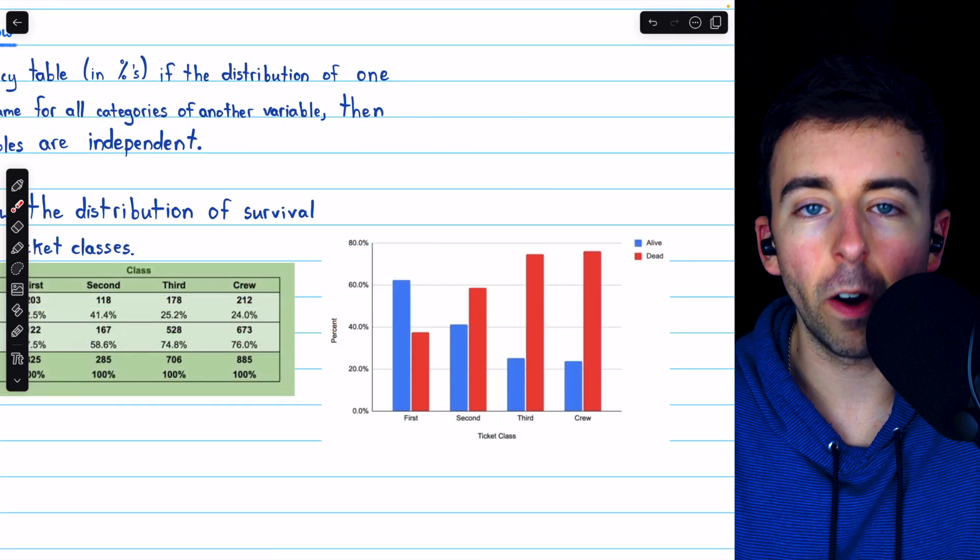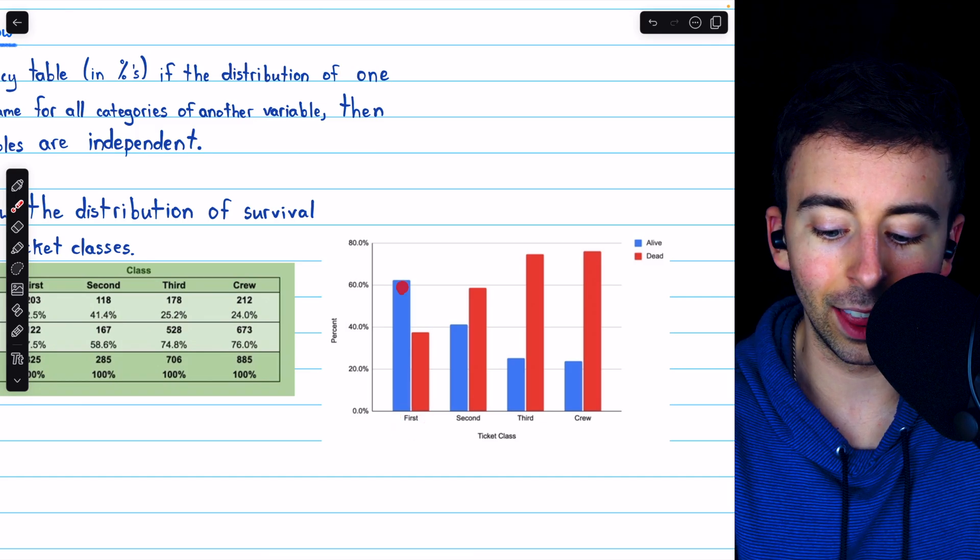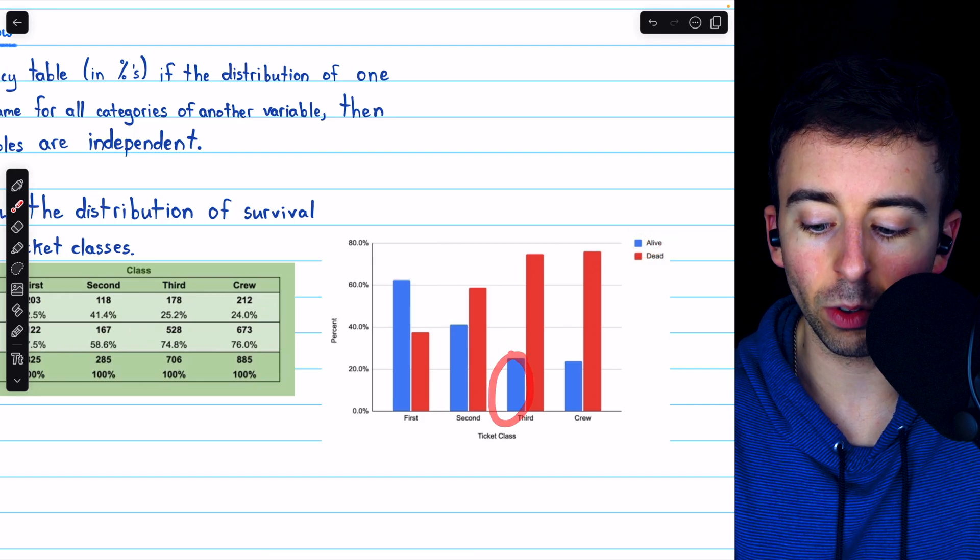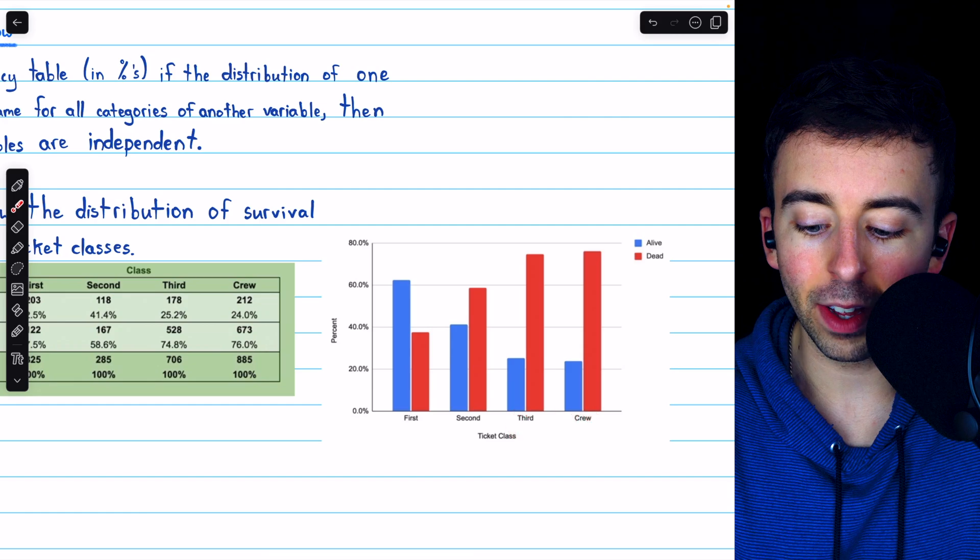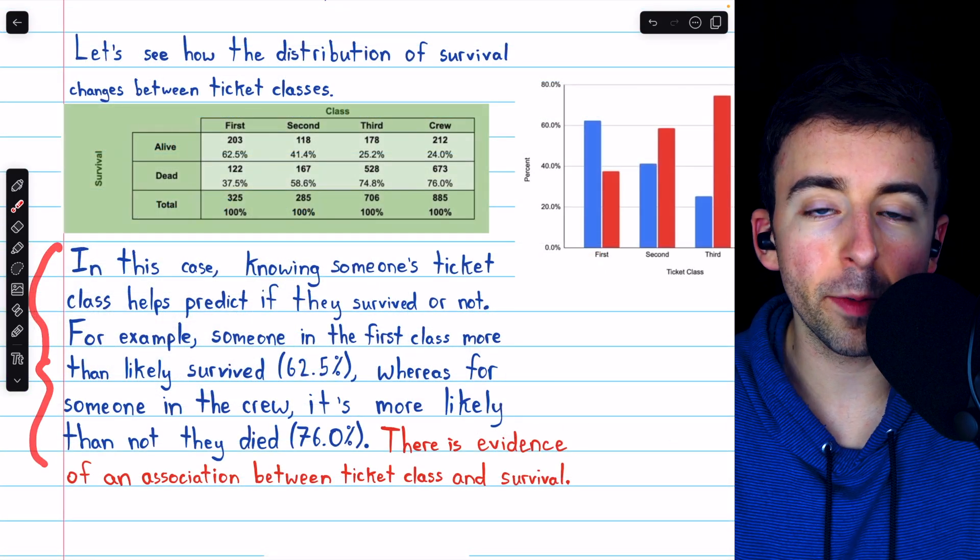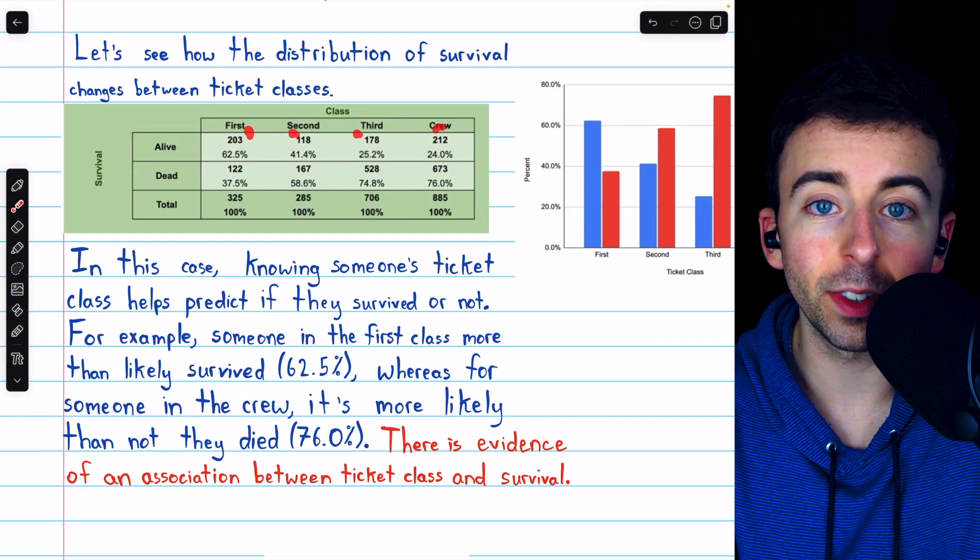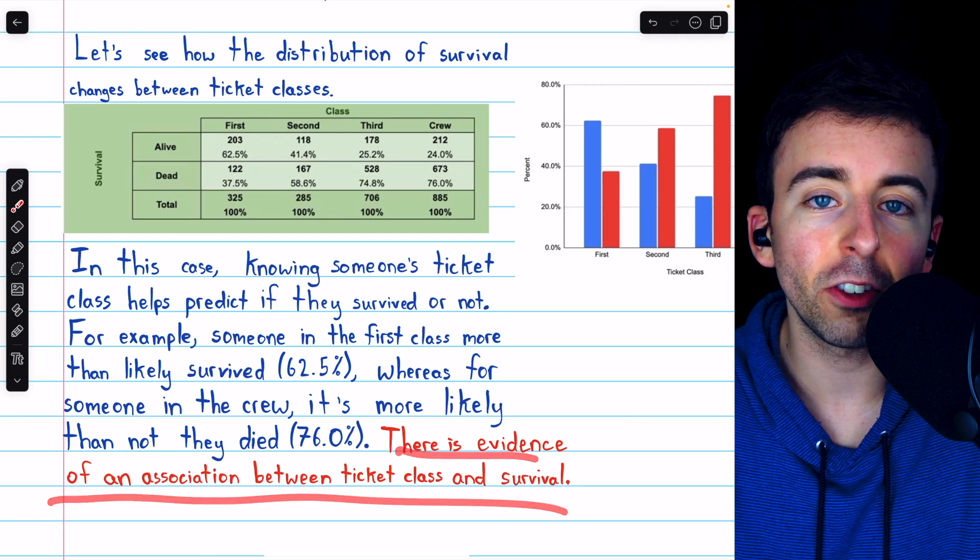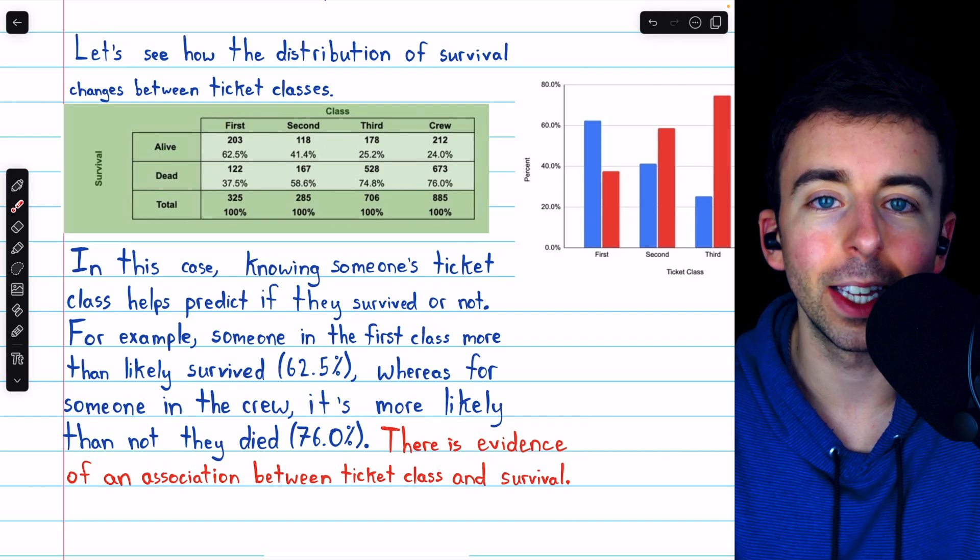We could also use a side-by-side bar chart to visualize these differences. In the first class, we can see that alive rectangle is way higher than the alive rectangle for third class or for crew. And of course, both third class and crew have very large death rectangles. So yes, there are very clear differences in the distribution of survival status across the different categories of ticket class. And so this is strong evidence that there is an association between ticket class and survival status. The variables don't appear to be independent.